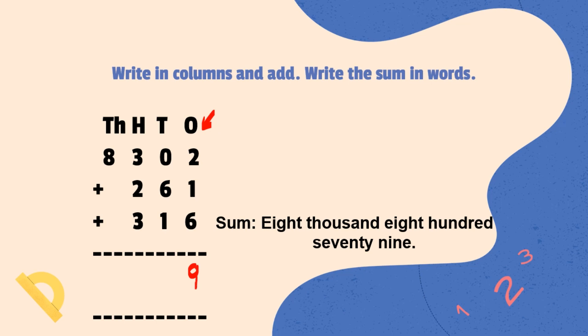Adding 10's place digits, 0, 6, 1 will give us 7. Adding 100's place digits, 3, 2, 3 will give us 8.